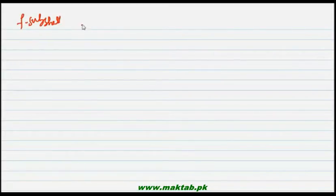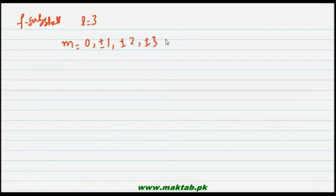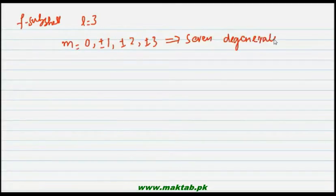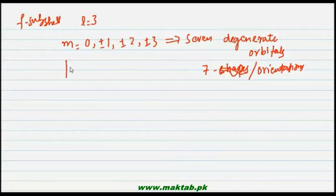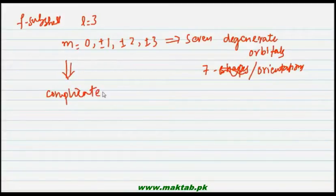For the f subshell, l = 3 and m = 0, ±1, ±2, ±3, giving a total of seven values. There are seven degenerate orbitals for f subshell, and they have seven different orientations along different axes. The shapes of f subshell orbitals are very complicated and cannot be drawn on a page at this level, so they are not mentioned in the textbook.